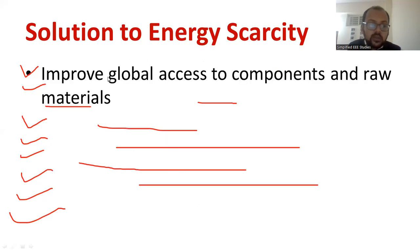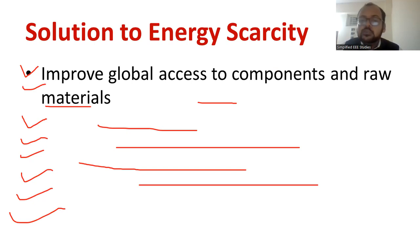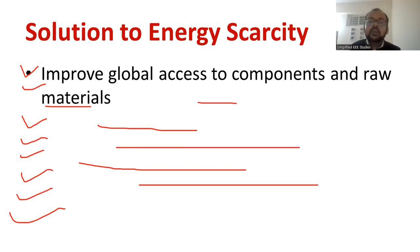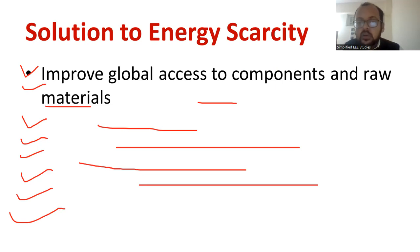Improve global access to raw materials required for producing electricity — materials must be available everywhere regardless of country boundaries. For example, solar panel materials not available in India have to be imported from neighboring countries. If materials were available everywhere, electricity production would be easier everywhere. Also, many villages remain in the dark, so we should go for distributed generation and standalone or hybrid power generation applications.